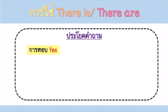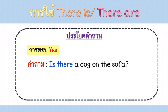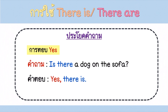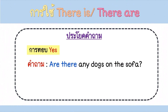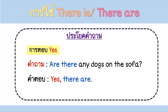เรามาดูการตอบนะคะ ถ้าตอบว่ามีหรือใช่ เราตอบว่า Yes แต่ไม่ได้ตอบสั้นๆ แค่ Yes นะคะ ตัวอย่างเช่น Is there a dog on the sofa? ถ้ามีเราก็ตอบว่า Yes, there is ค่ะ อีกตัวอย่าง Are there any dogs on the sofa? ถ้ามีเราก็ตอบ Yes, there are ง่ายมากเลยใช่ไหมล่ะคะ